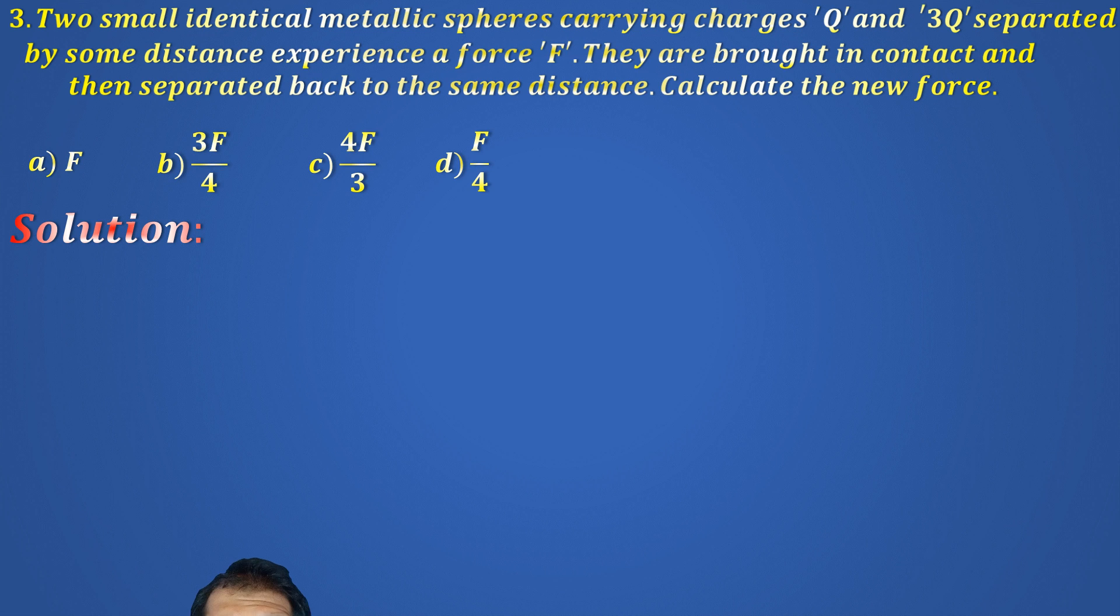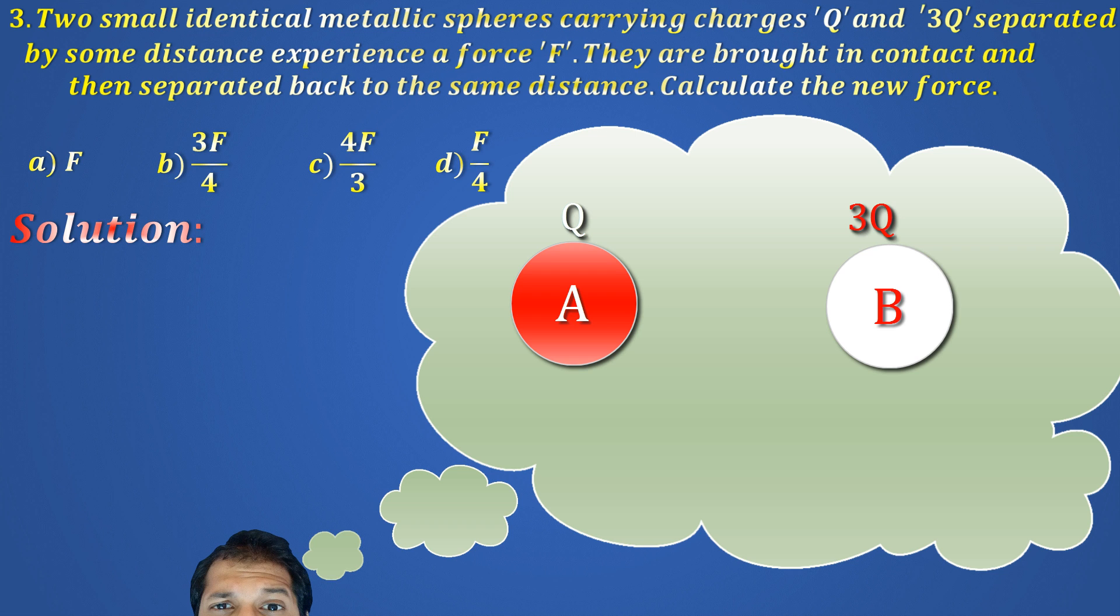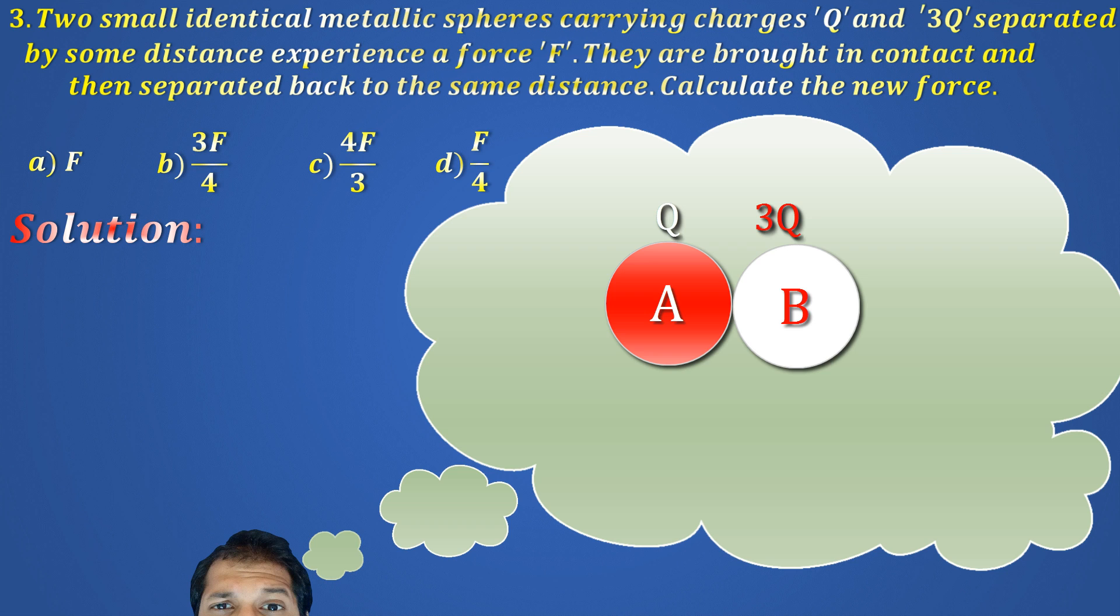Two identical metallic spheres have some charge Q and 3Q. They are brought together and separated back to the same distance. We have to calculate the new force. Alright, first of all, why would the force change? The answer is obvious. Conduction. Charges will transfer from one metallic sphere to another when they are brought together. But how much charge gets transferred? Or put it another way, what is the final charge in either of the spheres?